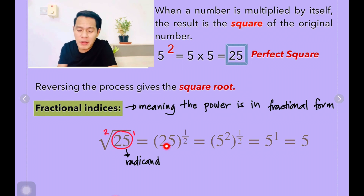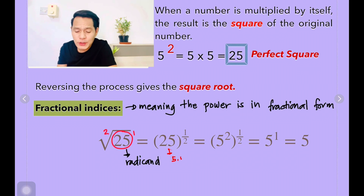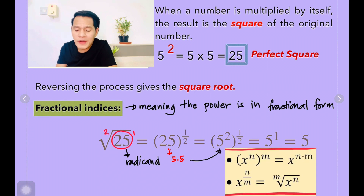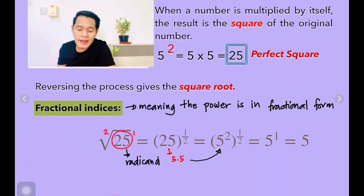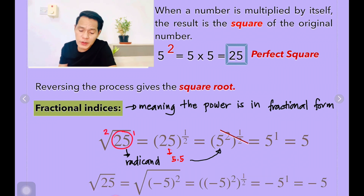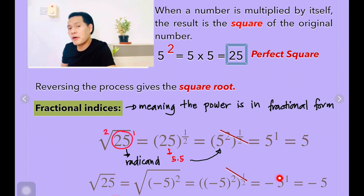And then we simplify it. Remember that 25 can also be written in square form — when you find the factors, 25 is 5 times 5, so 5 to the power of 2. Then we cancel the 2: 2 times 1 half gives us 5 to the power of 1, which is equal to 5. Also remember that negative 5 times negative 5 is equal to positive 25. So squaring negative 5 and doing the cancellation of 1 half and 2, the remaining is negative 5. That's why for the square root of a number, there must be two possible values: the positive and the negative.